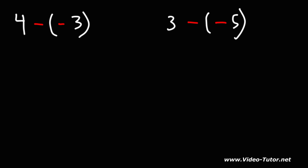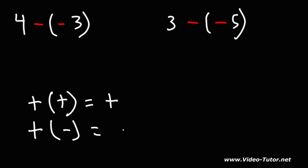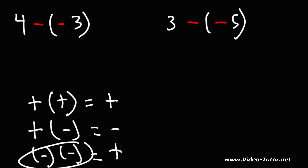So we have 4 minus negative 3. Before we do this, here are some things you want to keep in mind. When you have two positive signs next to each other — a plus times a plus — that's going to be a plus. When you multiply a positive times a negative number, you get a negative number. When you multiply two negative numbers, you get a positive number. So anytime you see two negative signs next to each other, you can replace that with a positive sign.